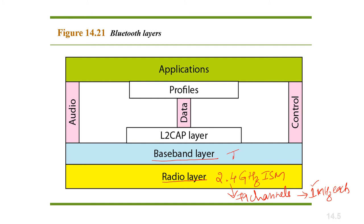TDD-TDMA is a kind of half-duplex communication in which the sender and receiver send and receive data but not at the same time — we cannot transmit and receive at the same instant. However, communication for each direction uses different hops. A good analogy for this type of communication is a walkie-talkie.